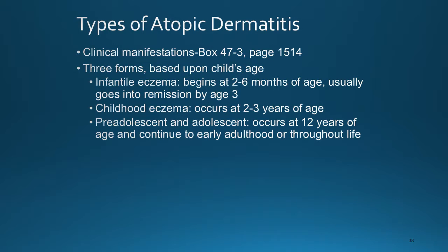There are three forms of atopic dermatitis. Infantile eczema is generalized, especially on the cheeks, scalp, trunk, and extensor surfaces of the extremities, beginning at 2 to 6 months of age and usually going into remission by age 3. The childhood form occurs in flexural areas like the antecubital space, popliteal fossa, neck, wrists, ankles, and feet, at 2 to 3 years of age. The preadolescent and adolescent form occurs on the face, sides of the neck, hands, feet, and antecubital and popliteal fossa to a lesser extent, beginning at 12 years of age and continuing to early adulthood or throughout life.